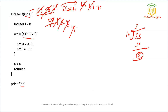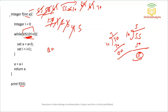Now checking: 70 mod 10 gives 0. The condition a mod 10 not equal to 0 is now false, so we exit the while loop. We update a as a minus i, so 70 minus 5 equals 65. That is what we return, so the output will be 65. This question was all about the modulus operator with some computation — overall an easy question.